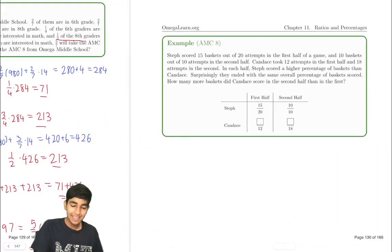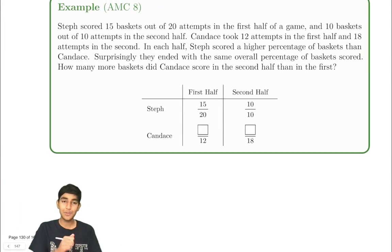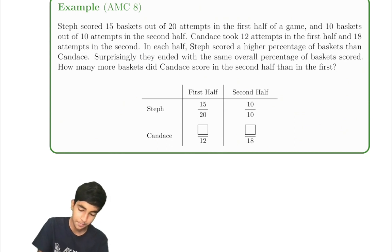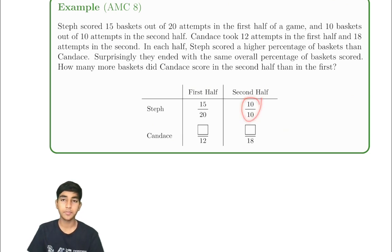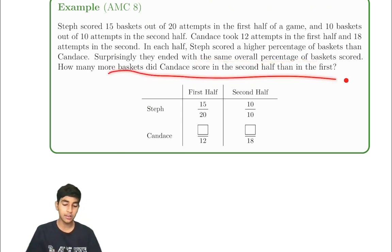Let's try a slightly more tricky problem this time. This one is going to require some ingenuity. Steph scored 15 baskets out of 20 attempts in the first half. And 10 baskets out of 10 in the second half. Candice took 12 attempts in the first half, 18 in the second. And in each half, Steph scored a higher percentage of baskets. However, at the end, they ended with the same overall percentage. How many more baskets does Candice score in the second half than in the first half?